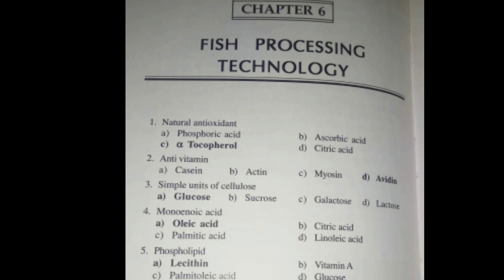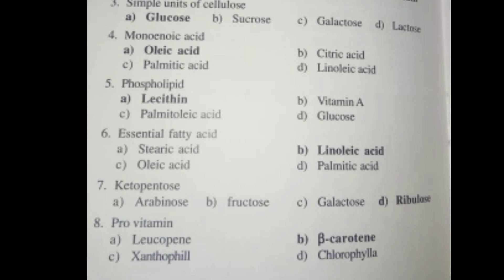Question 3 - Simple units of cellulose. The right answer is Glucose. Question 4 - Monoenic Acid. The answer is Option A, Oleic Acid.